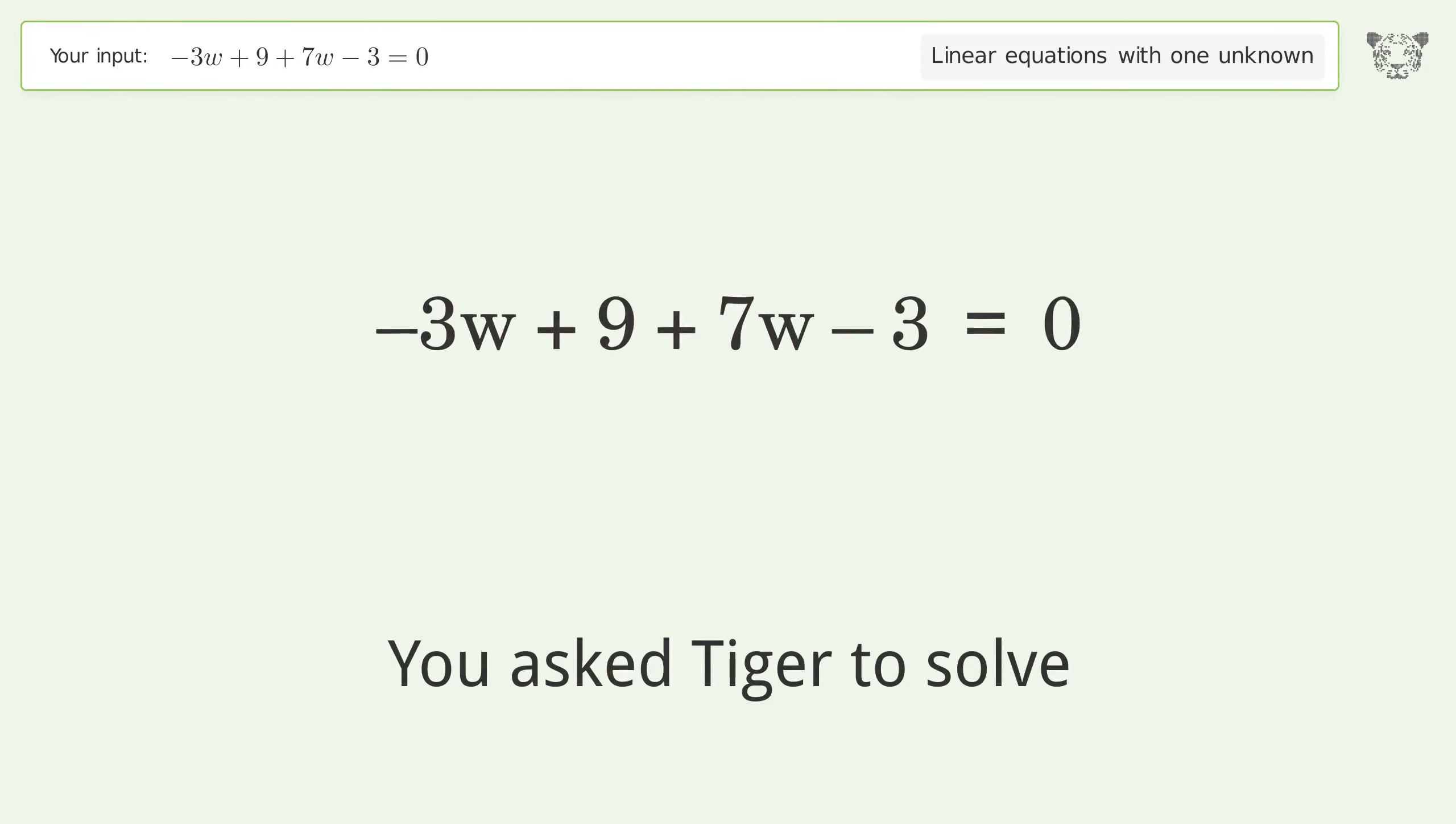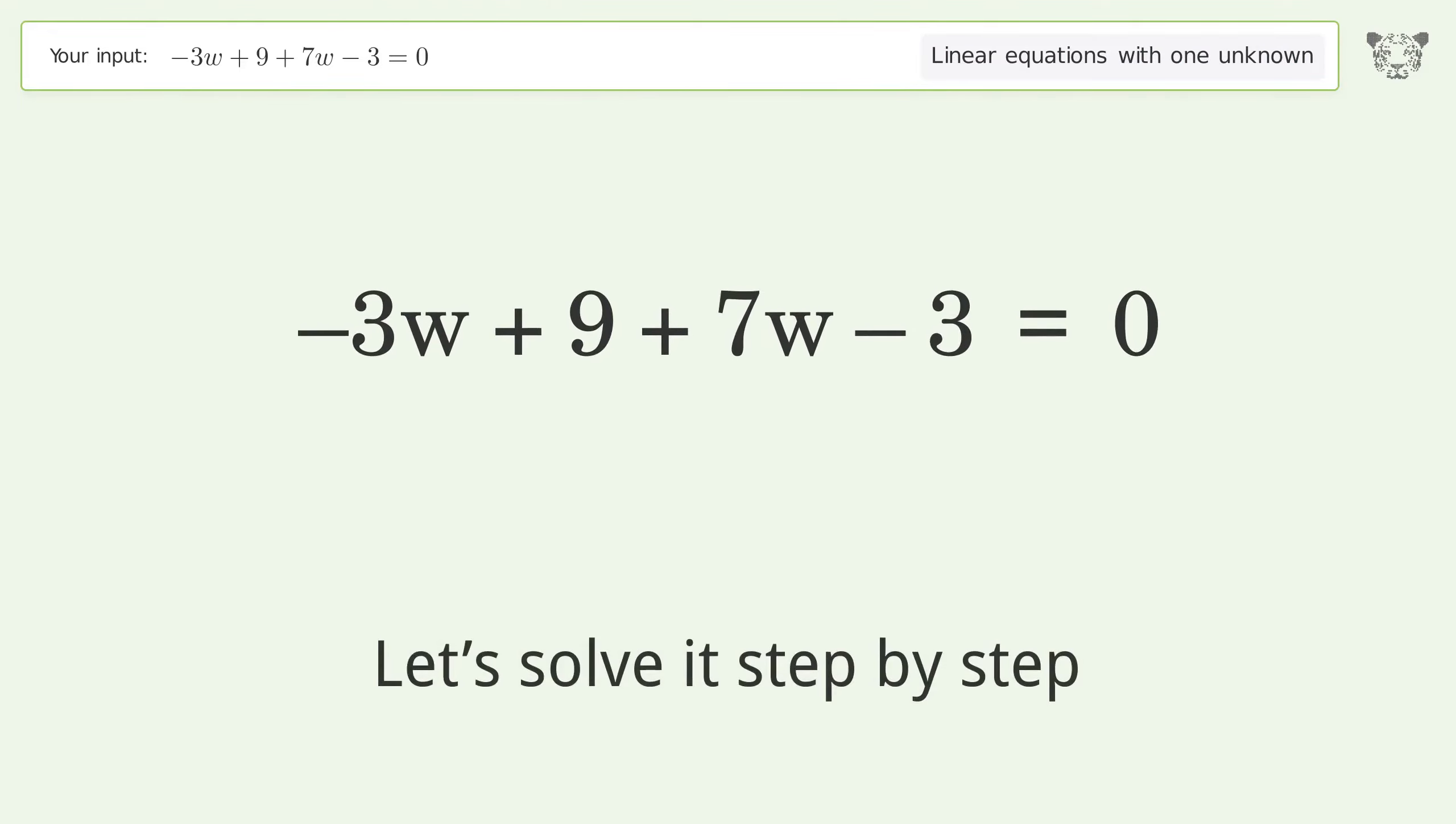You asked to solve this. It deals with linear equations with one unknown. The final result is w equals negative 3 over 2. Let's solve it step by step.